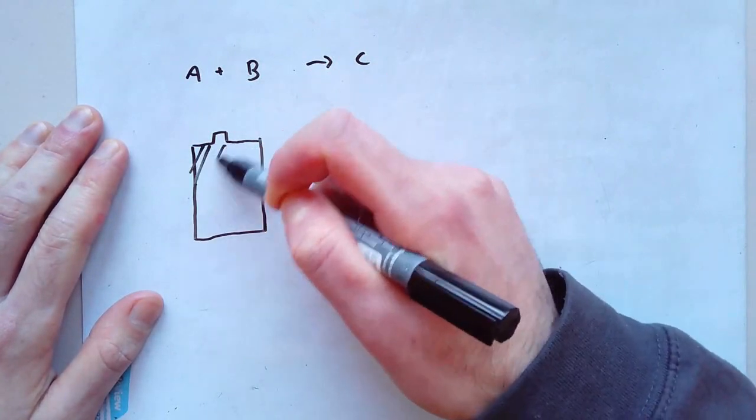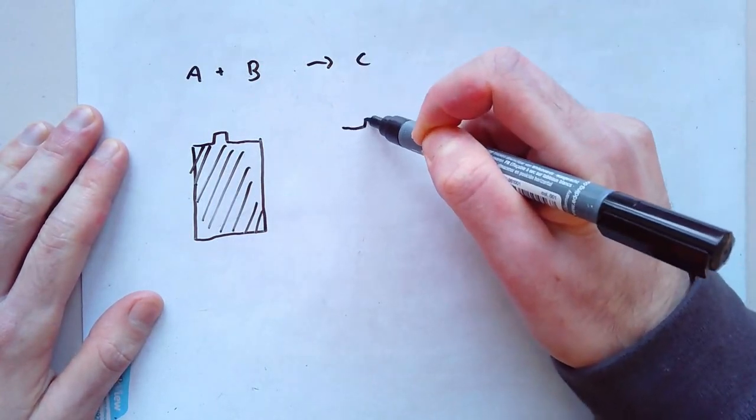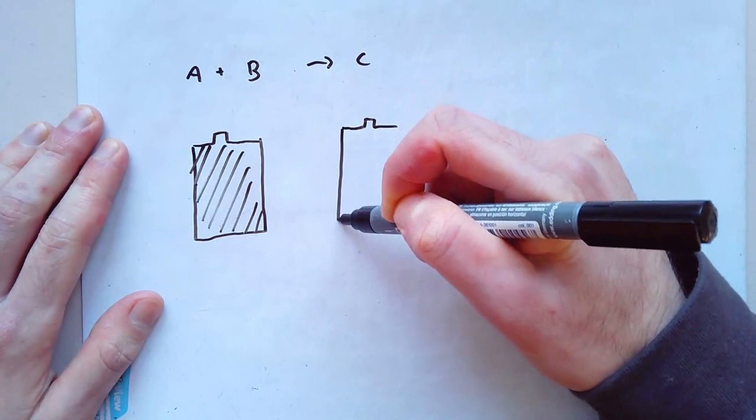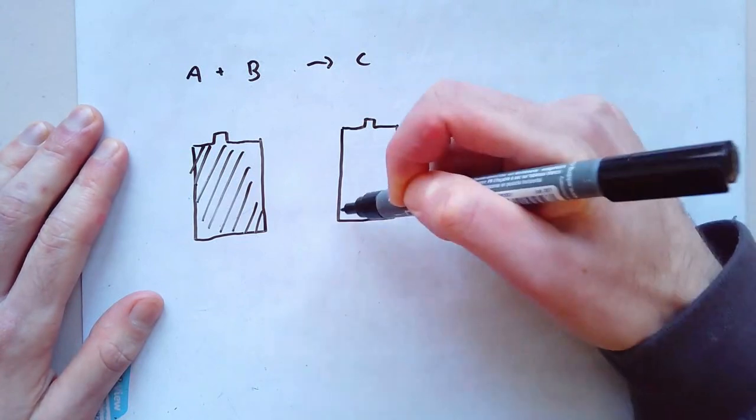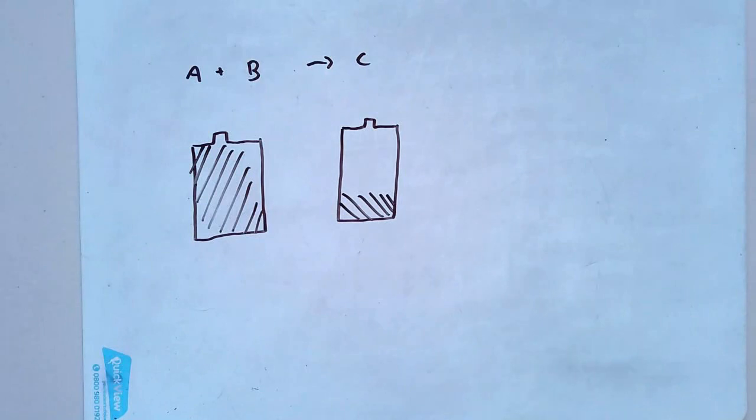If A and B is storing loads and loads of energy and C is storing very little energy, then the reaction has to be exothermic. The reaction has gone somewhere.